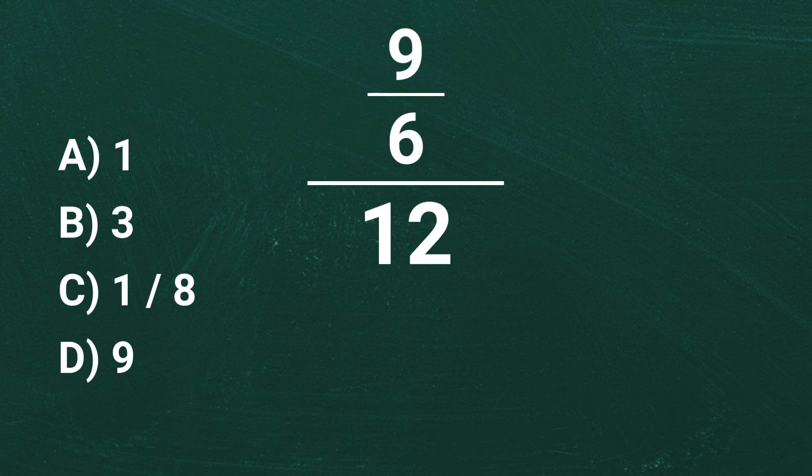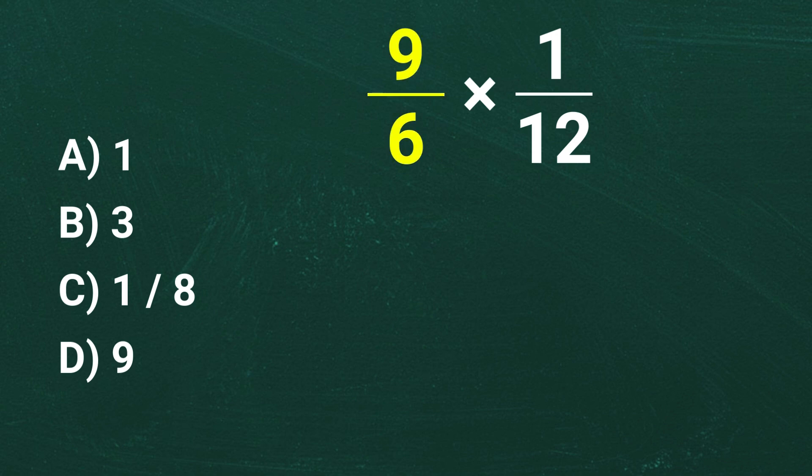So instead of dividing by 12, we will multiply by 1 over 12. But before we do that, let's simplify 9 over 6 first. Both 9 and 6 can be divided by 3. So 9 divided by 3 equals 3 and 6 divided by 3 equals 2. So now our expression is 3 over 2 times 1 over 12.